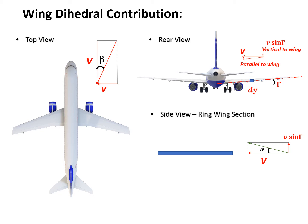Because of this small angle of attack, there will be induced lift produced on that wing section. We know small alpha can be derived as: sin(alpha) equals v·sin(gamma) divided by V. Since we assume the sideslip velocity v is small, alpha is also very small, so we can assume alpha equals v·sin(gamma) divided by V. And since the wing dihedral angle is also small, sin(gamma) is roughly gamma, so alpha equals v·gamma divided by V.